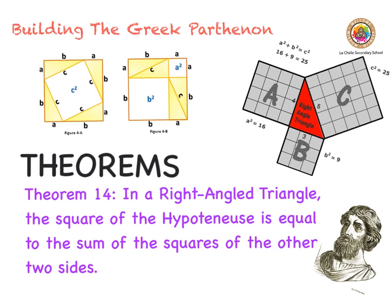Pythagoras' Theorem basically says that in a right-angled triangle, the longest side — the square of it — is equal to the sum of the squares of the opposite two sides. We can see very neatly here: 5 squared is 25, 4 squared is 16, and 3 squared is 9. So 16 plus 9 is equal to 25. The longest side squared is equal to the sum of the squares of the opposite two sides.